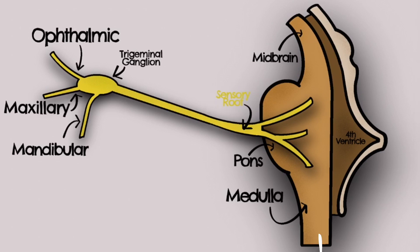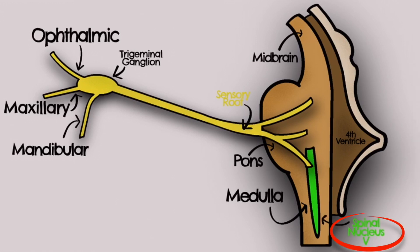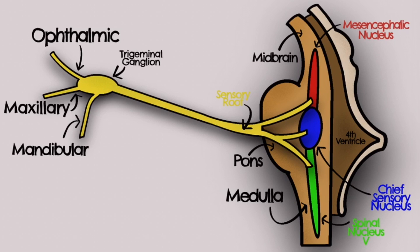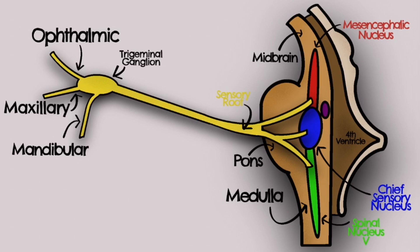Let's relabel the trigeminal nuclei. The spinal nucleus spans the pons and medulla and carries pain and temperature information from the face. The chief sensory nucleus is located in the pons and carries touch and pressure sense. The mesencephalic nucleus is most rostral and carries proprioceptive information from the temporomandibular joint. Finally, the motor nucleus is located medial to the chief sensory nucleus and innervates the muscles of mastication.